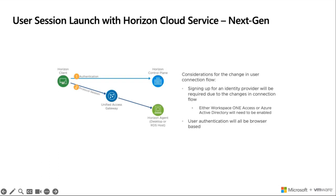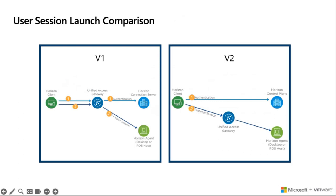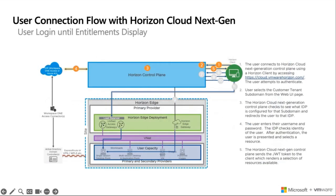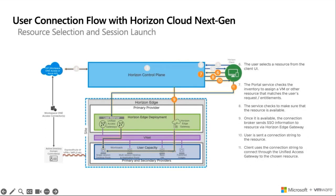User authentication will be entirely browser-based in this scenario. Looking at a side-by-side of version one and version two, we're looking at a much more streamlined approach in version two. I won't go through every single one of these steps for the architecture, but I did want to leave you with the user logon and entitlements in terms of how the logon approach works. In Next Gen, the user is able to select the resource from the client UI, and drilling down into the various levels, the user is sent to the client itself from a much more streamlined approach than before.